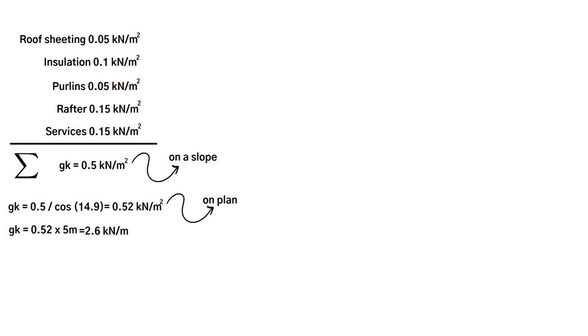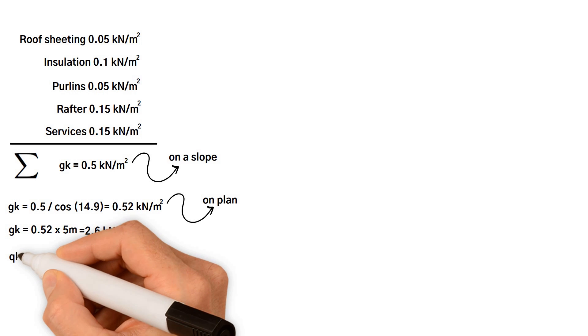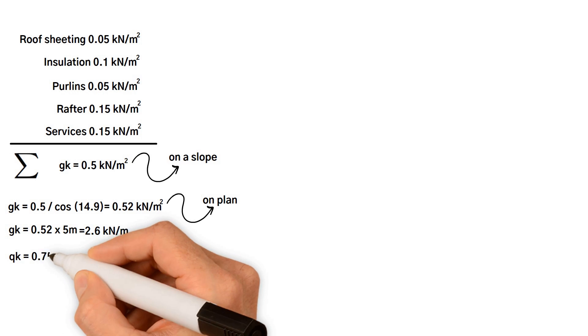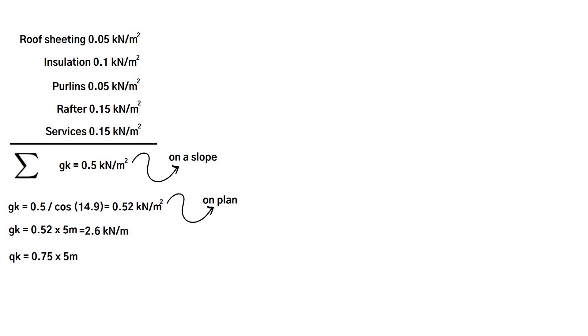For this analysis, we will adopt imposed load of 0.75 kilonewtons per meter squared. Therefore, imposed load on the roof equals 0.75 times 5 meters, which equals 3.75 kilonewtons per meter.